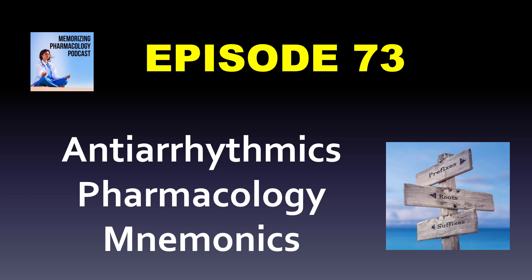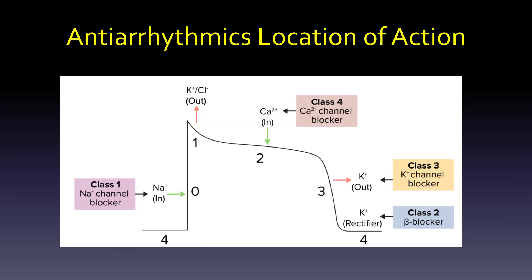We're going to go into antiarrhythmics — or anti-dysrhythmics, which is really more correct — pharmacology mnemonics. The first step is to see where these fit. You'll hear class 1 (usually written with Roman numerals): class 1 sodium channel blockers, class 2 beta blockers, class 3 potassium channel blockers, class 4 calcium channel blockers, and class 5 are kind of the unknowns or extras. Beta blockers and calcium channel blockers may be familiar from hypertension drugs, but these others might be a little new.